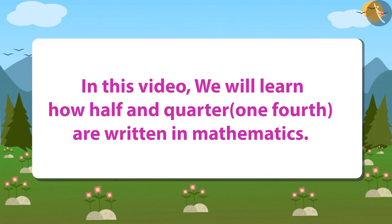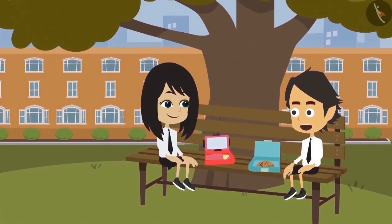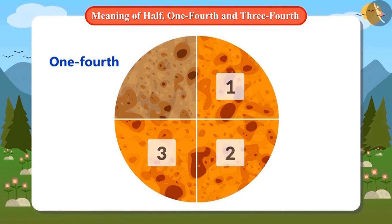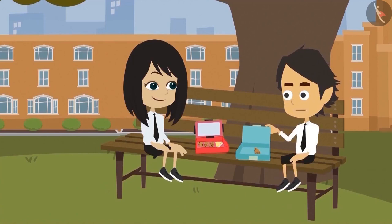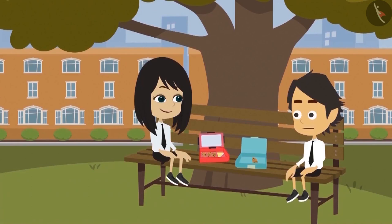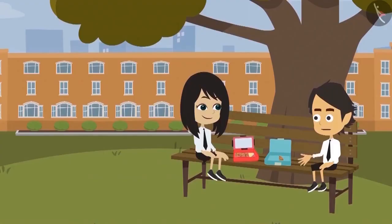Today we will learn how half and quarter are written in mathematics. I am not very hungry today. I will eat only a quarter of this paratha. You can eat the rest. Okay, I am taking these three parts. Now I will eat a quarter of this paratha. But how will we find out how much portion of this paratha did you eat? I would say that I ate three quarters of a paratha. This has become very difficult. I think there will be some way of explaining this in mathematics. It is related to mathematics — half, one-fourth, etc.